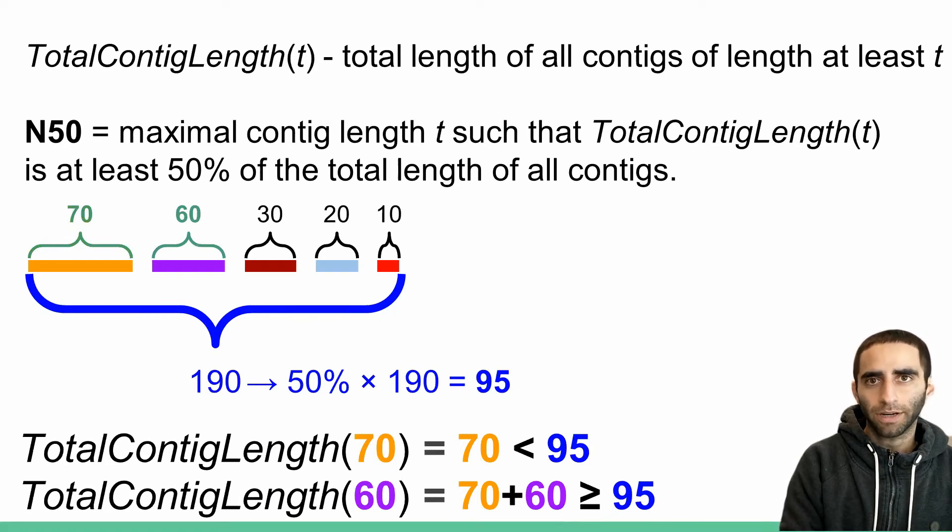Okay, so the 70 length contig wasn't enough. Let's consider the next contig now. So this one has length 60, which means that total contig length of 60 is 60 plus 70, which is 130. This is greater than or equal to 95, which means we've succeeded. We've now exceeded 50% of the total length. Therefore, the N50 of this assembly would be 60.